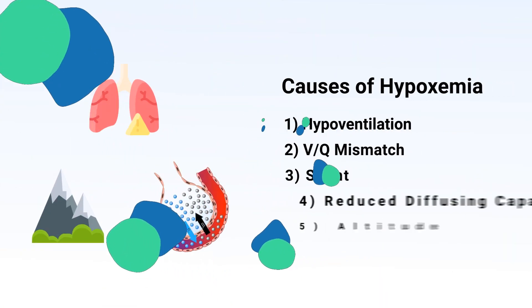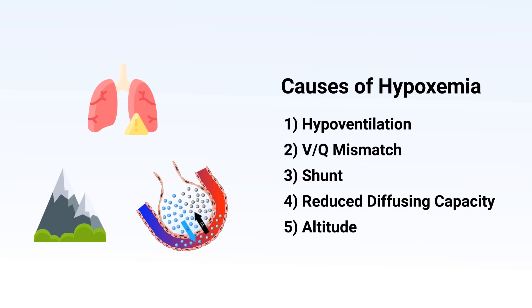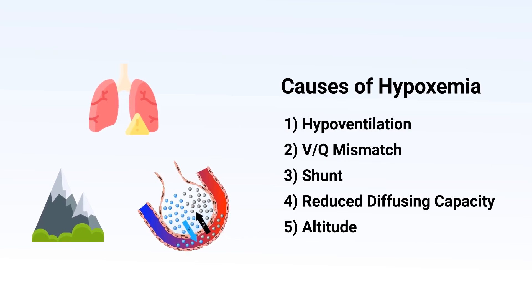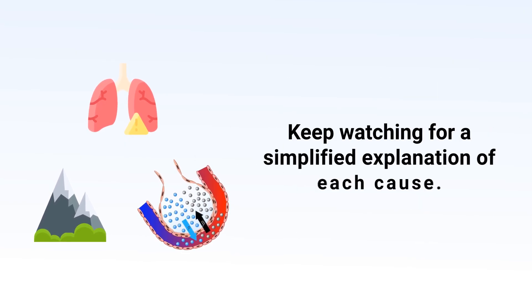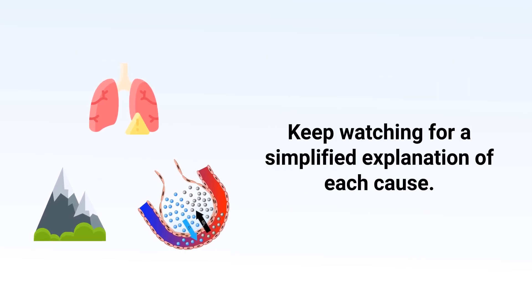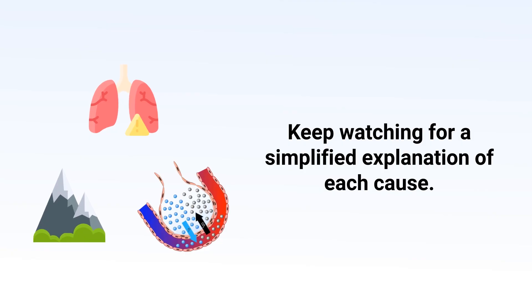There are actually five primary causes of hypoxemia: hypoventilation, VQ mismatch, shunt, reduced diffusing capacity, and altitude. Keep watching for a simplified explanation of each cause.